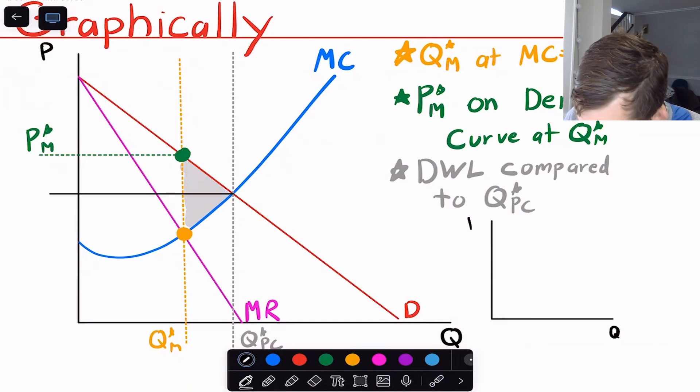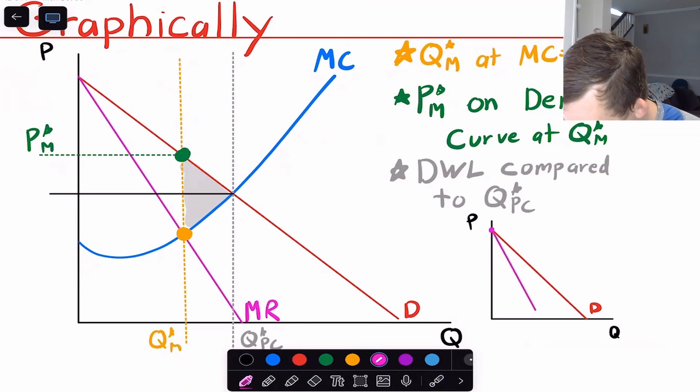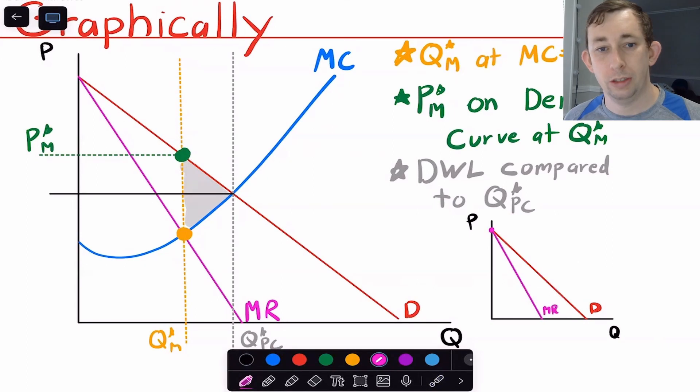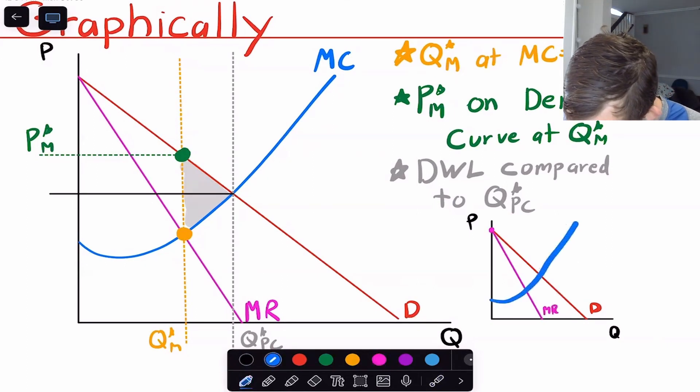So here's Q and here's P. We've got a demand curve that's going to look something like this. The marginal demand curve is going to start at the same place as the demand curve, but it's going to finish somewhere to the left of the original demand curve. So here's our marginal revenue curve. Our marginal cost is going to look something like this.